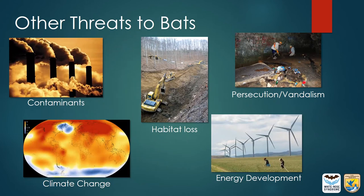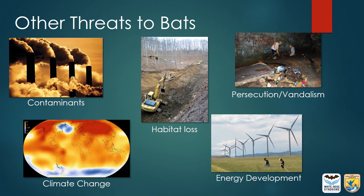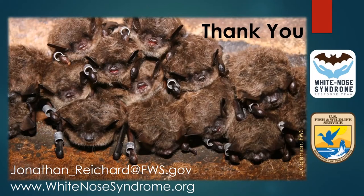White Nose Syndrome has decimated several North American bat species in the past decade and a half. While conservation biologists working together with shared strategies have made great progress, there's a long road ahead for these species to recover. Other threats like pollution, habitat modification, intentional harm, climate change, and energy development also pose threats. Addressing these threats will benefit from agreed-on standards of practice developed to facilitate necessary activities while maintaining safety for the animals we seek to conserve. Thank you for your time and your work.